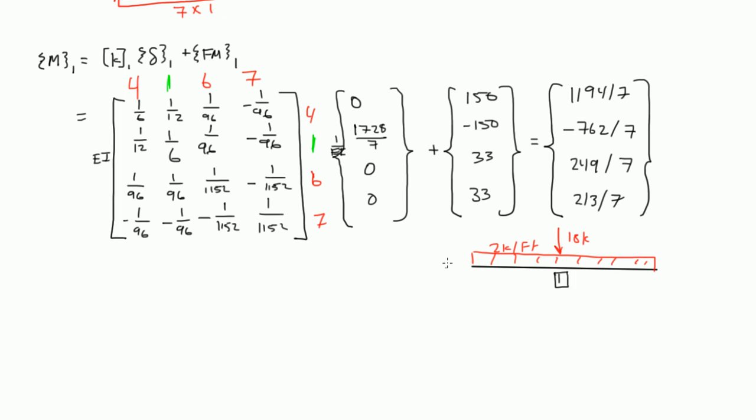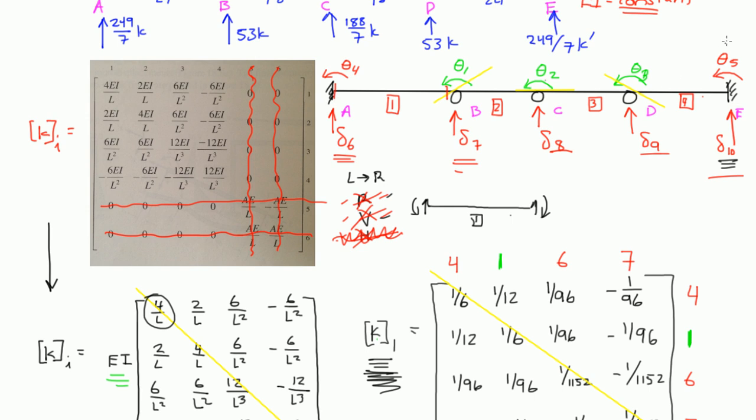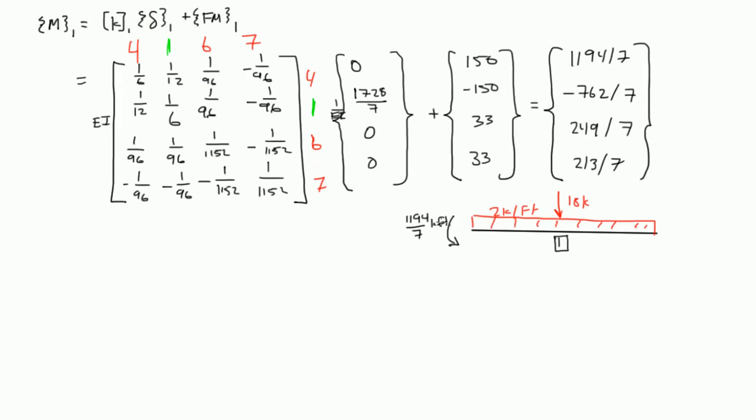So, 4 was on the left side of element 1, right? And that was 1194 over 7. So, 1194 over 7 kip foot, right? And the reason it's counterclockwise is because that's what we assumed when we drew our degree of freedom diagram. Data 4 was counterclockwise. And data 1 was also counterclockwise, right? So, we have this moment here, internal, right? And then, the second value was negative 762 over 7. And since our degree of freedom assumption was counterclockwise, and we had a negative in our answer, that means it's going clockwise, right? This way. 762 over 7 kip foot, right?